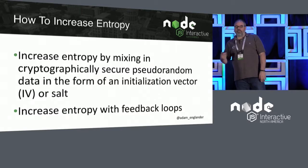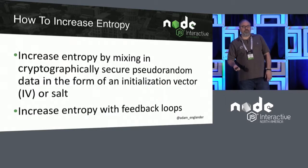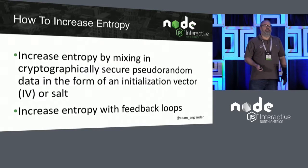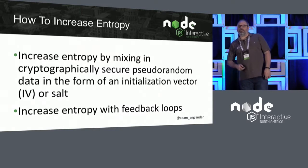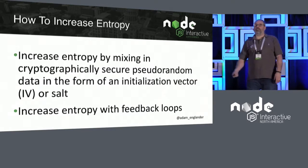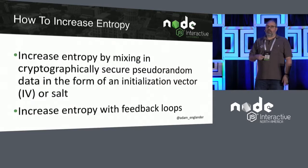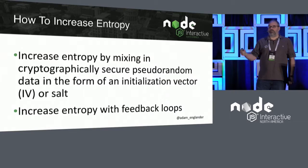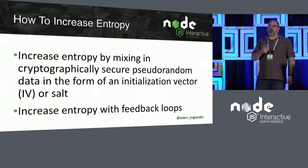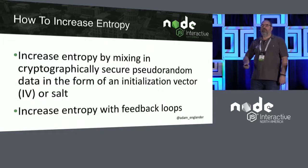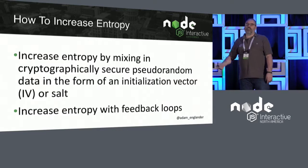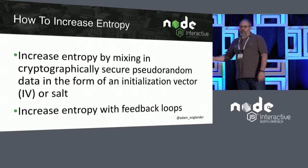You can also increase entropy with feedback loops. So when you're doing passwords, you should be doing key derivation. Or if you're doing encryption, you should be placing part or all of the encrypted data back into the next packet to be encrypted, so that creates more randomness as you go along.